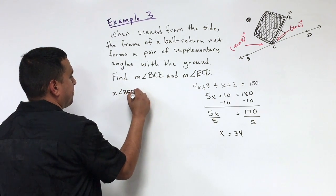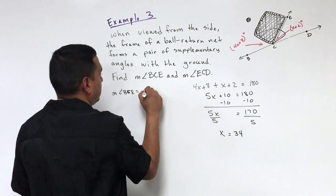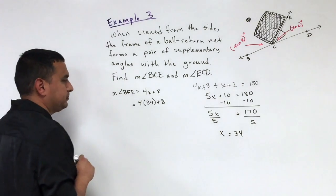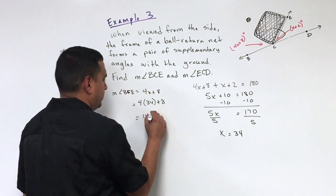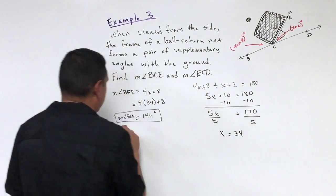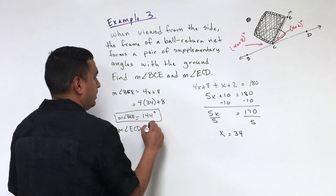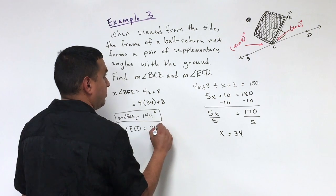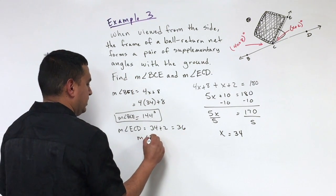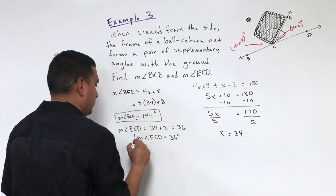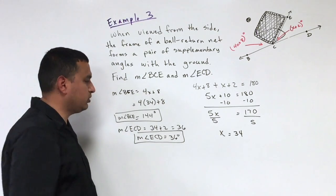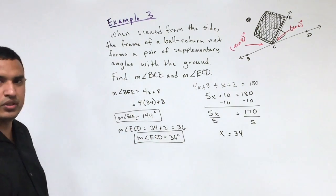We're not done — we want the actual angles, not just x. For angle BCE, the expression is 4x + 8, so substituting: 4 times 34 plus 8 equals 144 degrees. For angle ECD, the expression is x + 2, so 34 plus 2 equals 36 degrees. To check: since they're supplementary, 144 plus 36 should equal 180 — and it does, so the answer is correct.